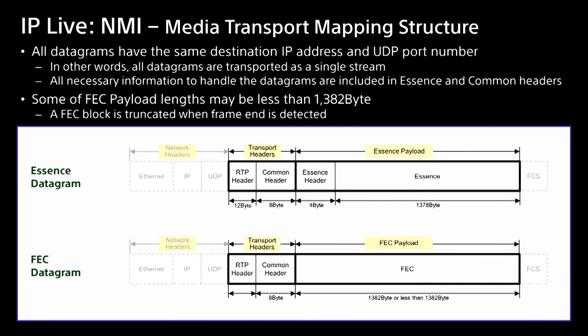This is the essence datagram. Essence can be video, audio, or metadata, and these are the worldwide accepted RTP headers — real-time protocol headers — required to encompass the essence. This essence datagram is subsequently repackaged inside the forward error correction datagram. The number of bytes in the forward error correction fluctuates: if correcting in the middle of the frame, it uses all of the IP packets; if reaching the end of the frame, it chops at the frame boundary.